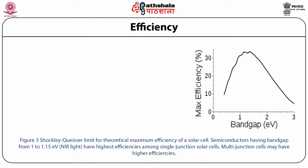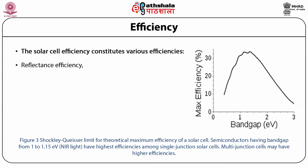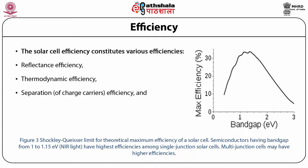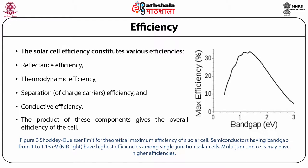Figure shows the Shockley-Queisser limit for theoretical maximum efficiency of a solar cell. Semiconductors having band gap from 1.5 eV, that is in the range of NIR light, have highest efficiencies among single junction solar cells. Multi-junction cells may have higher efficiencies. The solar cell efficiency constitutes various components: reflectance efficiency, thermodynamic efficiency, separation efficiency due to separation of charge carriers, and conductive efficiency. The product of these components gives the overall efficiency of the cell.